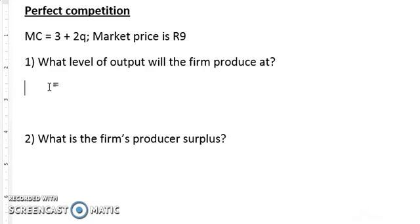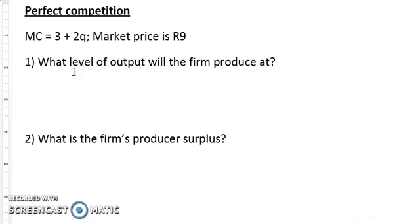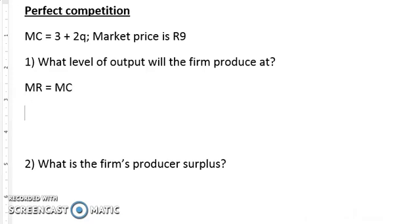We'll begin and say this is a perfectly competitive industry, and the firm's marginal cost curve is 3 plus 2Q. We have a market price of nine. The first question is: what level of output will the firm produce? If the firm wants to maximize its profit, it will produce at the output where marginal revenue equals marginal cost. For a perfectly competitive firm, marginal revenue equals price, so that's nine.